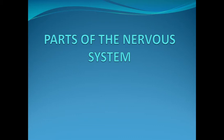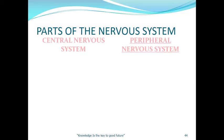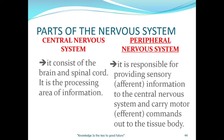As a continuation, we go to the part of the nervous system — a brief idea of the part of the nervous system which we can use in polygraphy. We have two major parts: the central nervous system and the peripheral nervous system. The central nervous system consists of the brain and the spinal cord, and it is the processing area of information.